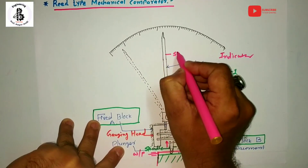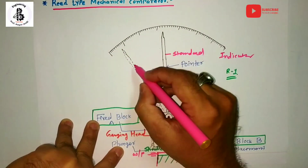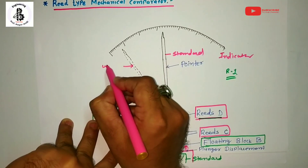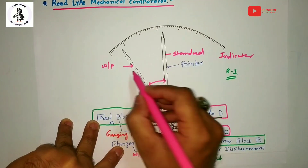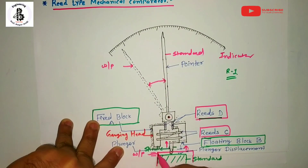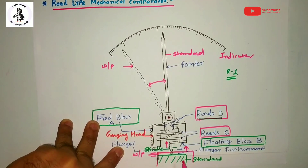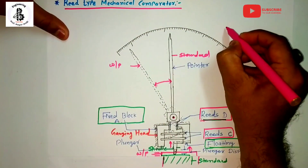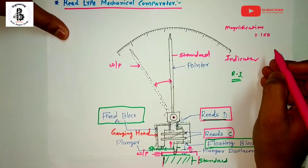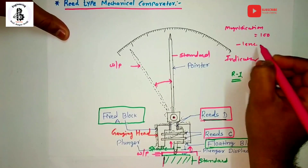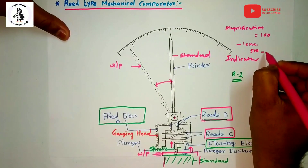The first reading is taken from the standard, and the second reading is taken from the work piece material. The deflection from the standard reading to the work piece reading depends on how much the particular dimension — length or height — has changed, expressed in terms of linear units. The magnification of the reed type comparator is up to 100, but if lenses or optical techniques are used, the magnification can go up to 500 to 1000.